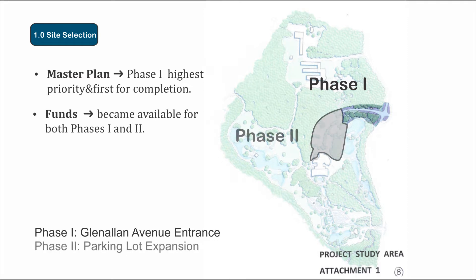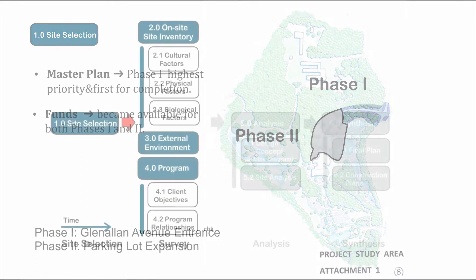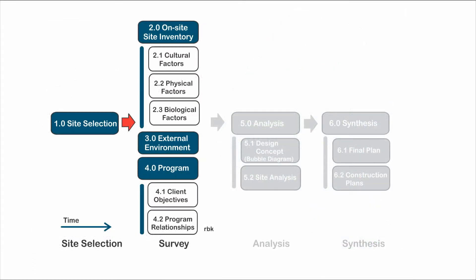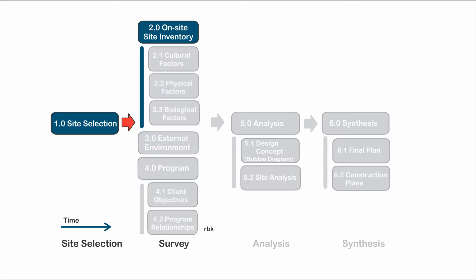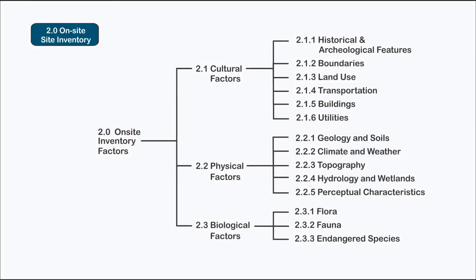Additional funds became available, enabling both phase 1 and 2 to be completed simultaneously. The survey or inventory phase consists of three phases. First is an inventory of the resource to determine its capabilities. Second are the external factors affecting the site, including potential users and markets. Third are the program relationships, including the client's objectives or the agency's mission and objectives regarding the use of the site.